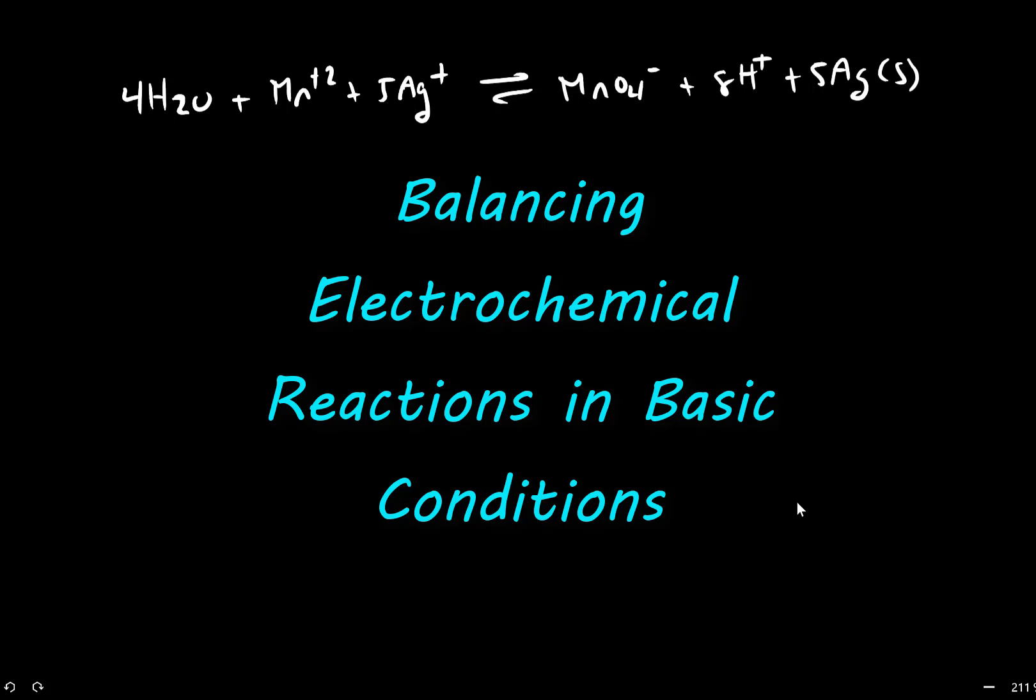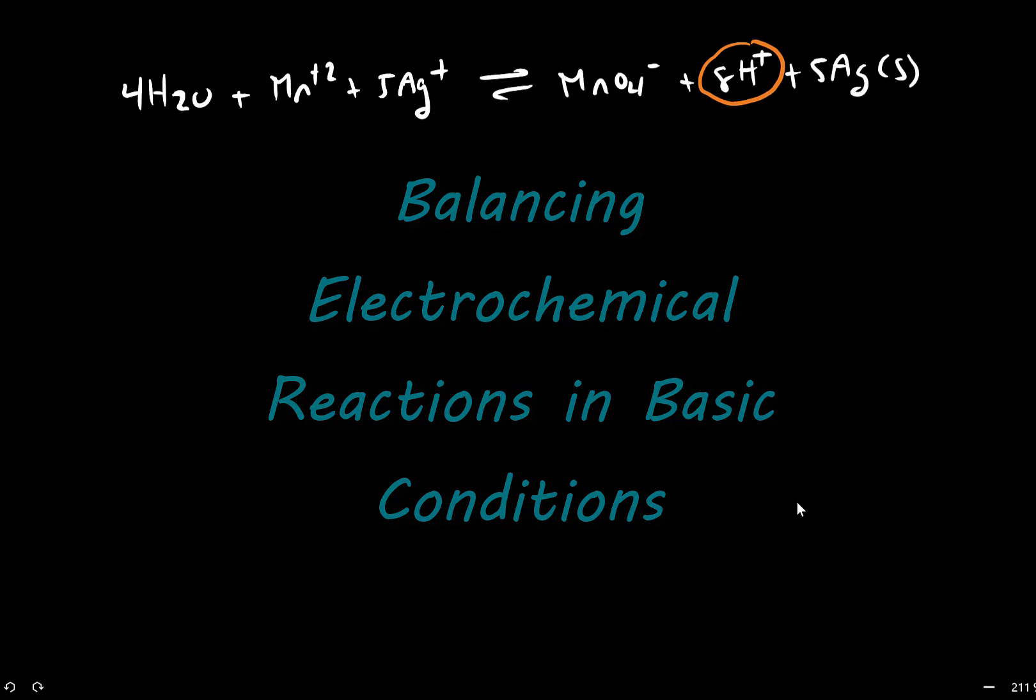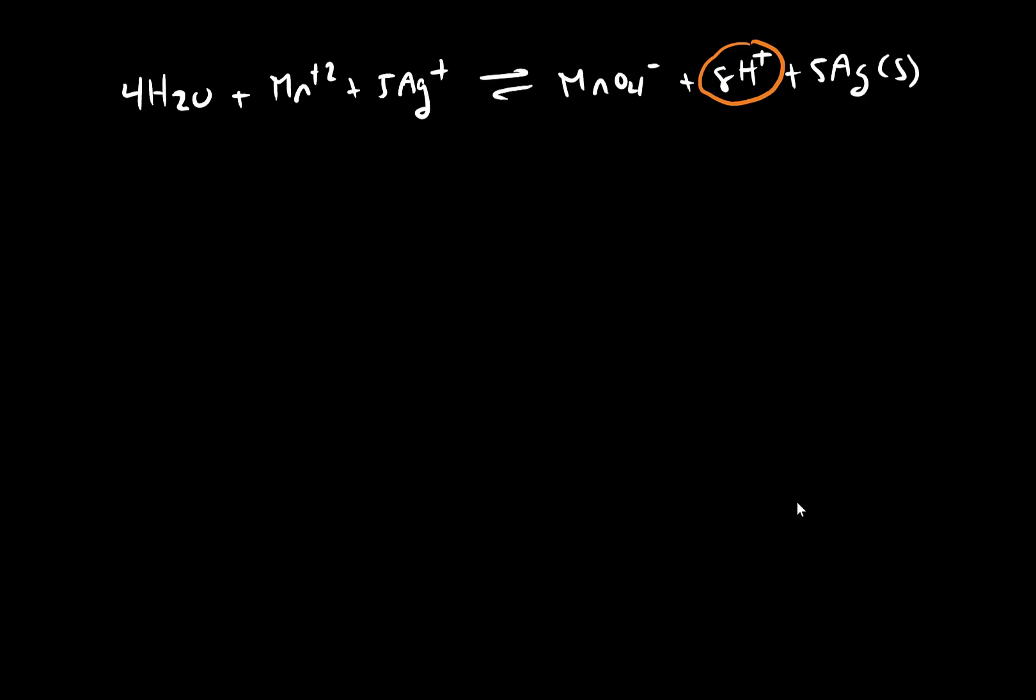So in this balanced electrochemical reaction that we saw in the previous video, we see that a proton is a product of this reaction. And as we've briefly touched on in the past, this proton is a general abbreviation for a hydronium ion. This means that we are balancing this under conditions where hydronium exists. So this would be how we balance chemical reactions that occur under acidic conditions.